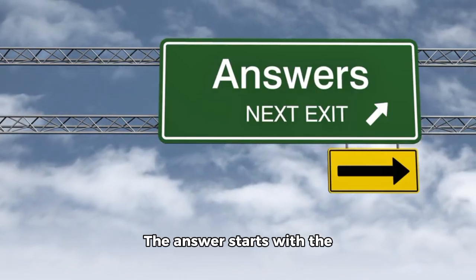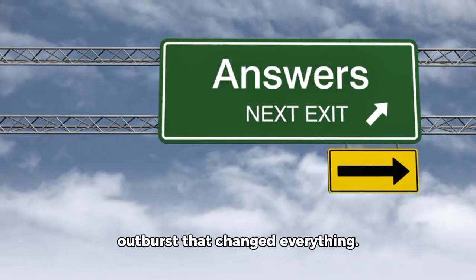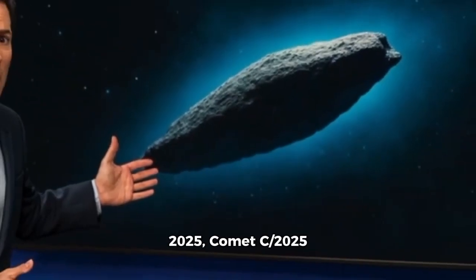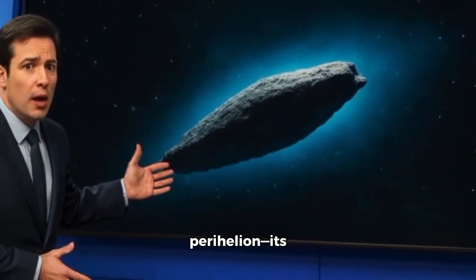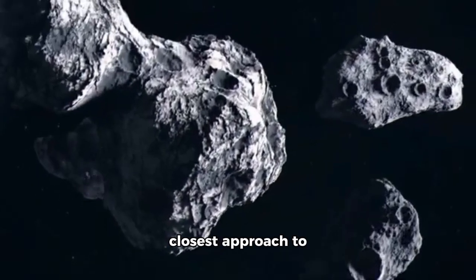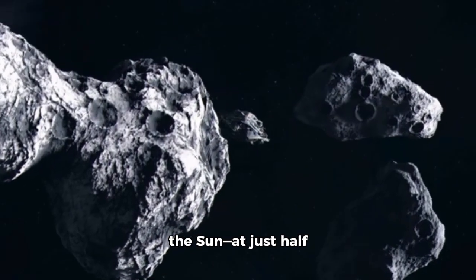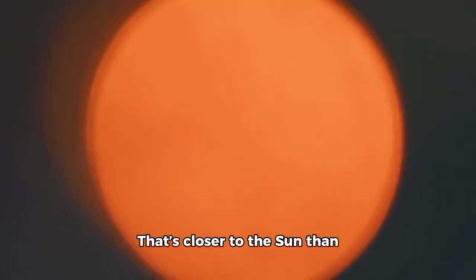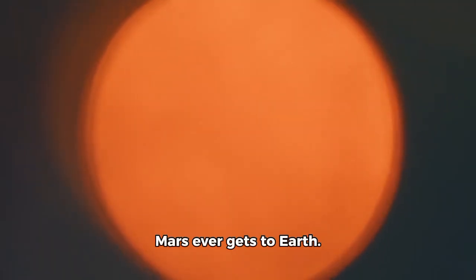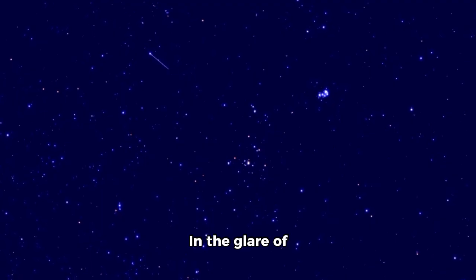The answer starts with the outburst that changed everything. On September 12, 2025, Comet C/2025 R2, now known as Swan, swept through perihelion, its closest approach to the Sun at just half an astronomical unit or about 75 million kilometers. That's closer to the Sun than Mars ever gets to Earth.